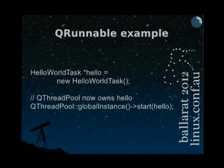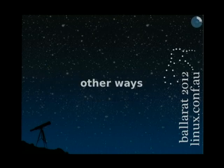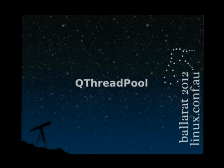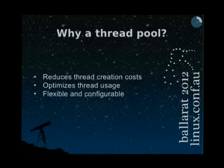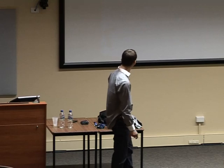I want to talk first about the other ways we have for creating threads in Qt. The first class to look at is QThreadPool. QThreadPool is unsurprisingly a pool of threads. A thread pool is extremely useful because it reduces thread creation costs — we can reuse threads we already created. Qt has an awesome feature which creates a thread pool based on how many threads your processor optimistically supports. If you have four processors, you'll get four or five threads. It's also flexible and configurable.